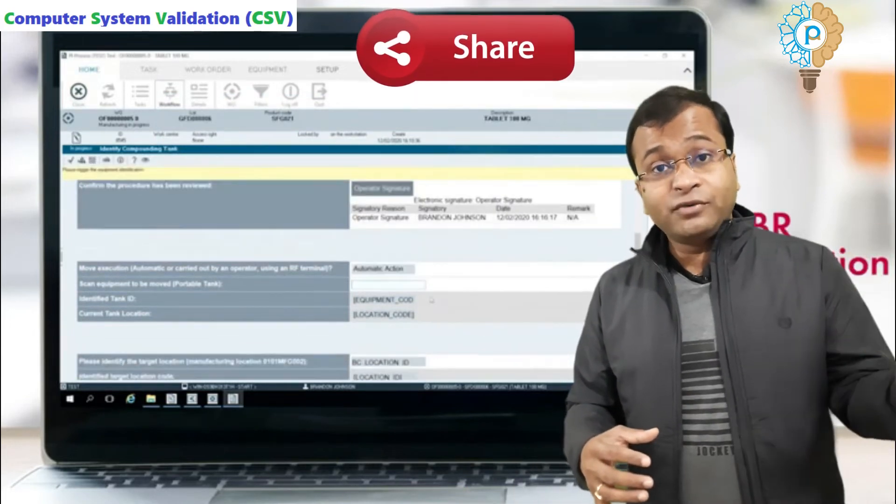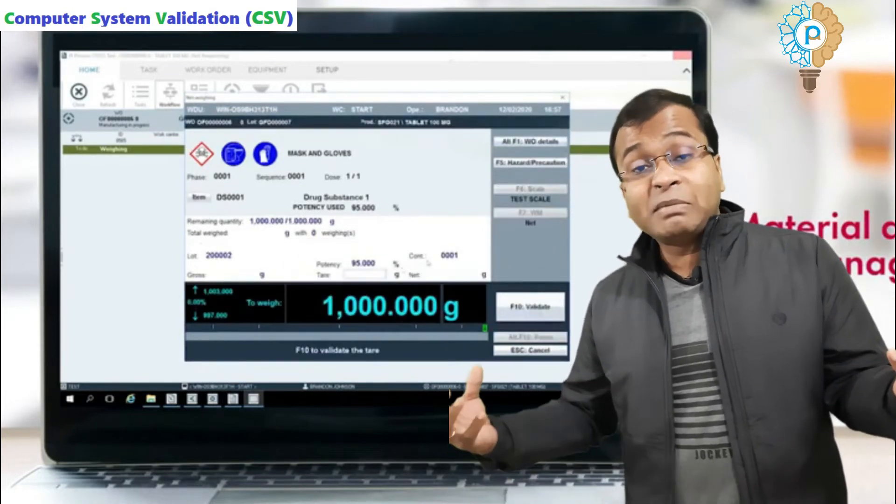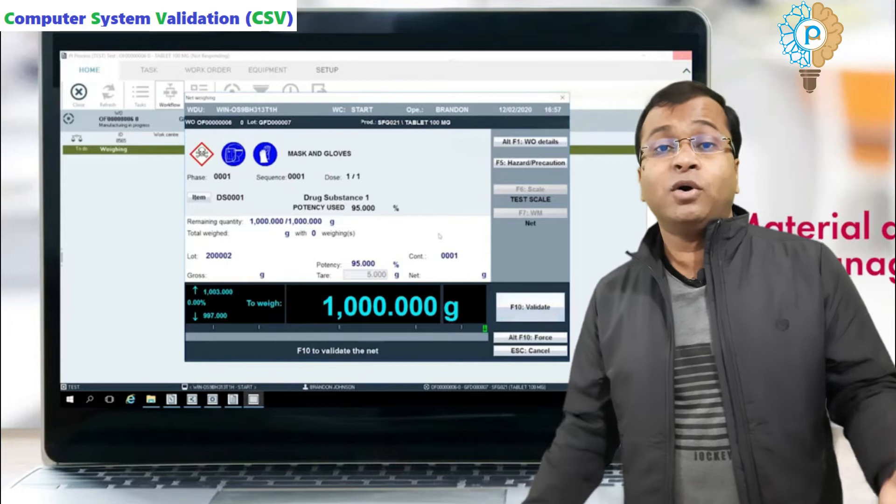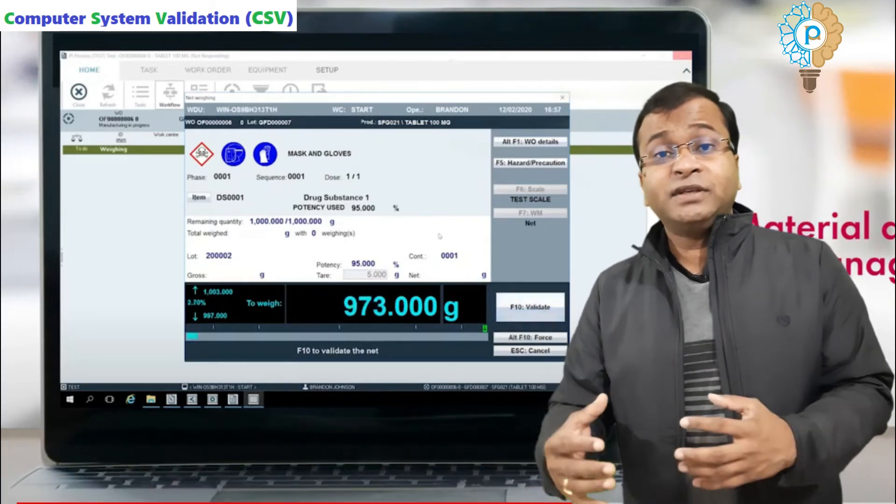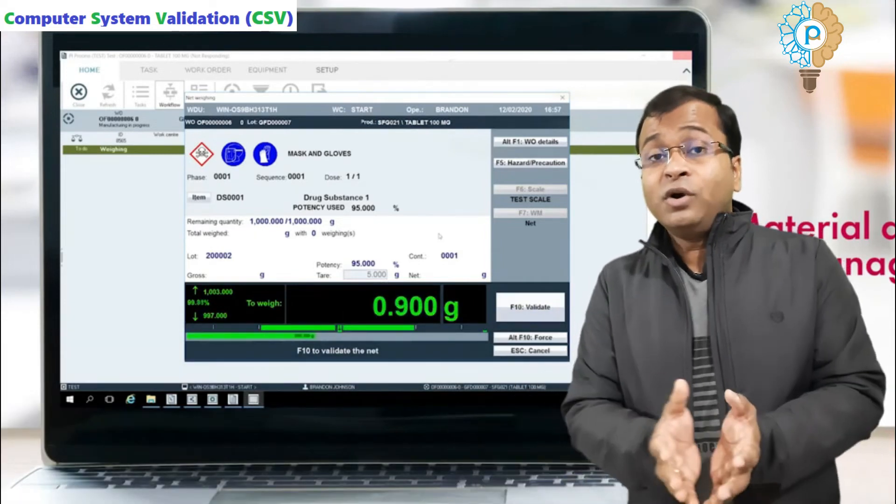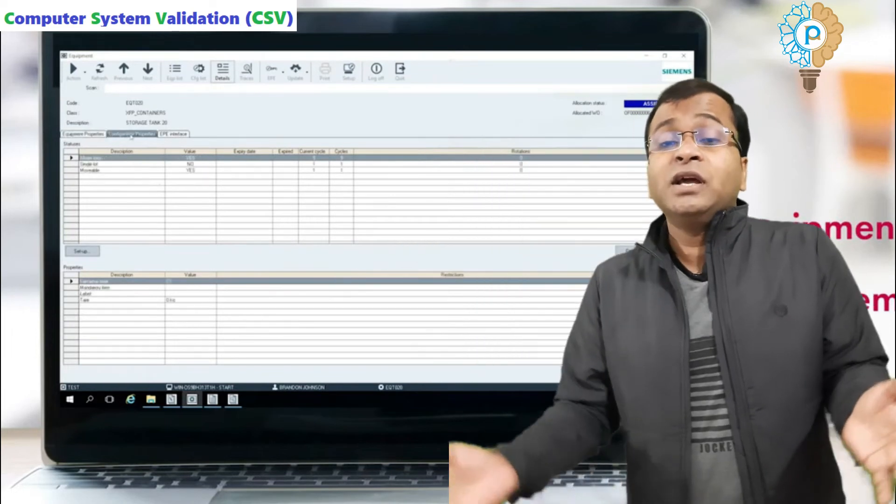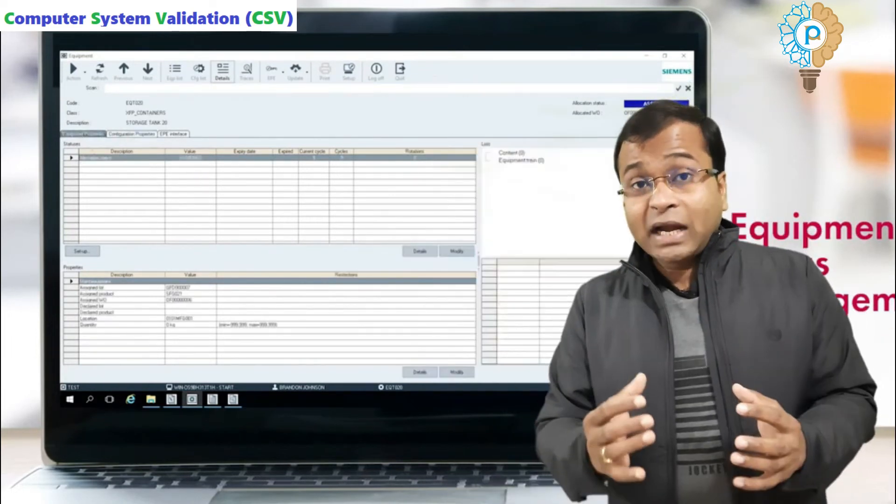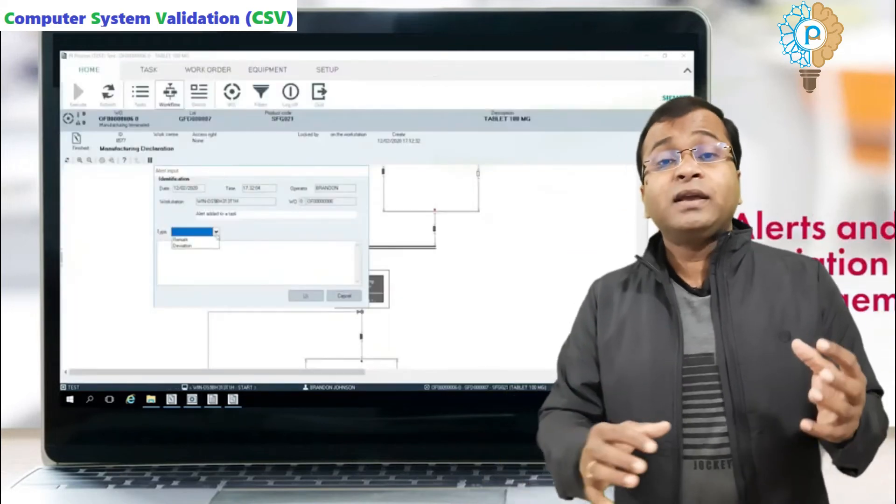Category 5 software is created as per the pharmaceutical manufacturing company only, because the process is different. Different types of companies have different manufacturing processes, and different product manufacturing processes are different, so the software has to be created as per the manufacturing process only. During Category 5 software creation, you have to remember a lot of things like: software qualification needed or not, password control, storage, backup, auditor review, and you should prepare one risk assessment.